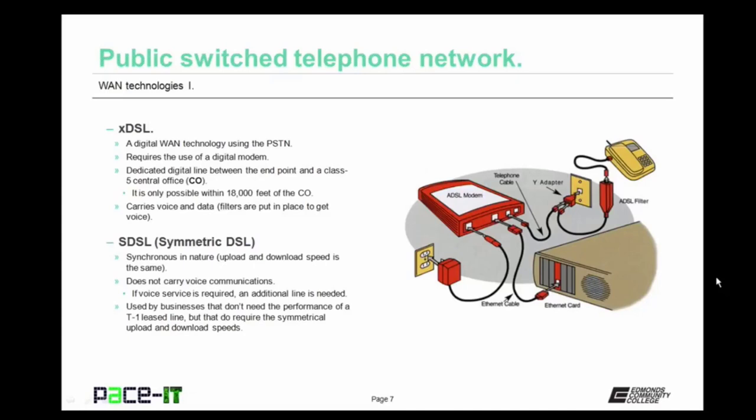First up is Symmetric DSL, or SDSL. Symmetric DSL is synchronous in nature — the upload and download speeds are the same. SDSL does not carry voice communication, so if you need voice service, an additional line will be needed. SDSL is used by businesses that don't quite need the performance of a T1 leased line, but do require the symmetrical upload and download speeds.